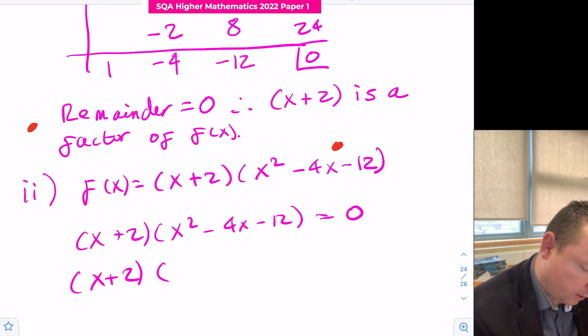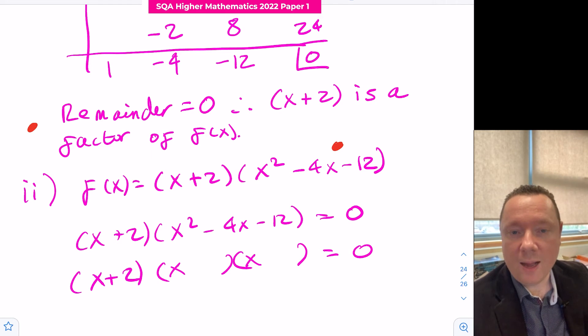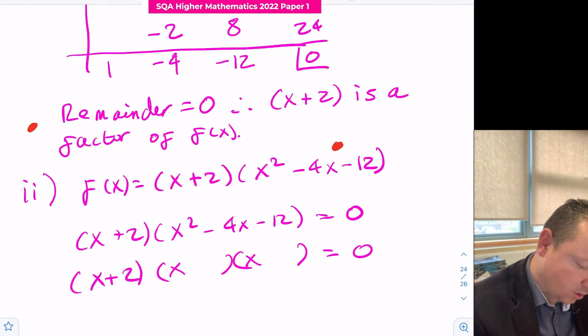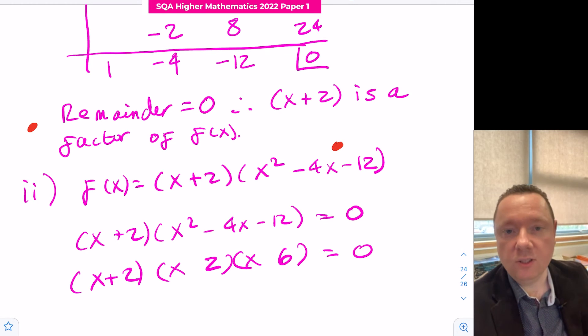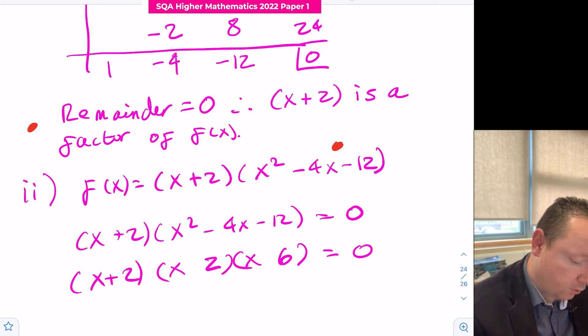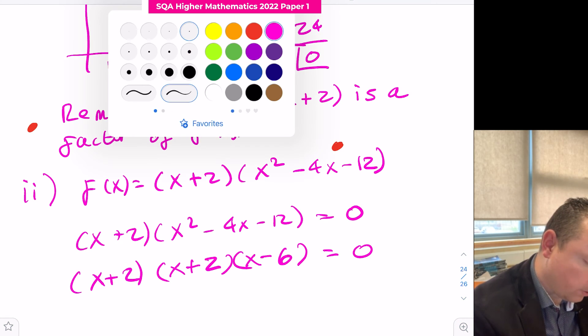We need to factorize our quadratic. We've got x and x, two numbers that multiply to make 12 but add or subtract to make 4. Must be 6 and 2. Since our final result is negative, one of them is negative and one is positive. We've got minus 6 plus 2 is minus 4, so that equals zero. If we get to that point, we get another mark.